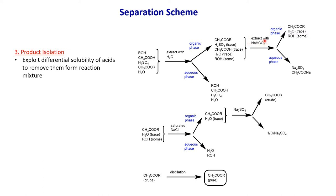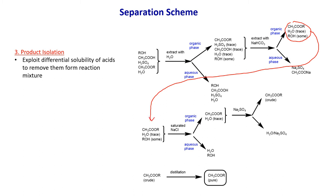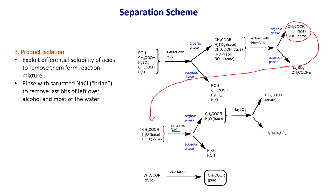In the second extraction, add sodium bicarbonate solution, which again gives two layers. In the aqueous layer, traces of sulfuric acid react with sodium to form sodium sulfate, and traces of acetic acid are also removed — they form salts soluble in the aqueous phase. The organic layer mainly contains ester, but it still has traces of water and some alcohol. Add saturated sodium chloride (brine) solution to remove the last bits of water and alcohol present in the organic phase.